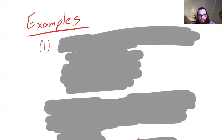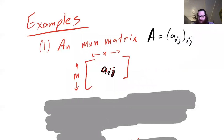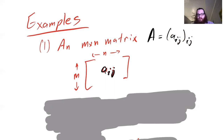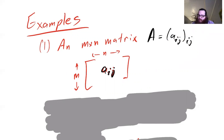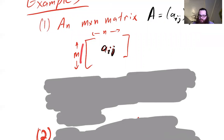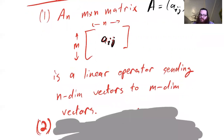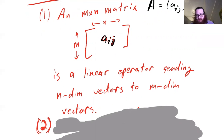What are some examples of linear operators? Well, one you're probably very familiar with is a matrix. A is a matrix with entries a_ij, where i denotes the row and j denotes the column. If A is an M×N matrix, it corresponds to a linear operator sending an N-dimensional vector to an M-dimensional vector, where the linear operation is just A times your vector — matrix-vector multiplication.